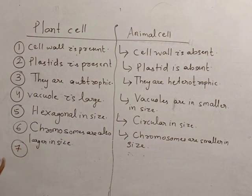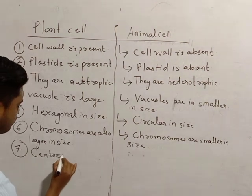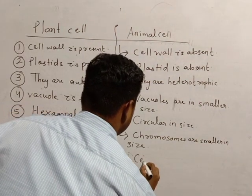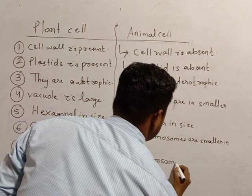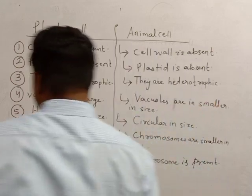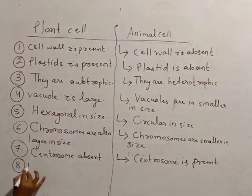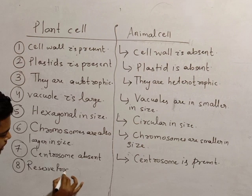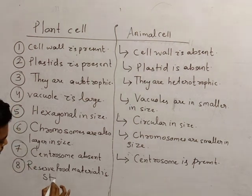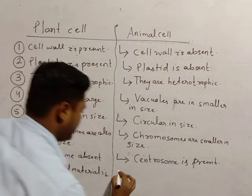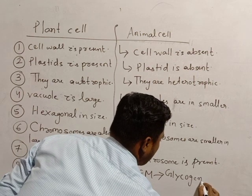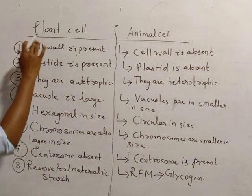The main difference point: in plant cells, centrosome is absent. Centrosome is absent here. But in animal cells, centrosome is present, which is helpful for cell division. Last point: reserve food material - in plant cells, reserve food material is starch. In animal cells, it is glycogen. These are the difference points between plant cells versus animal cells.